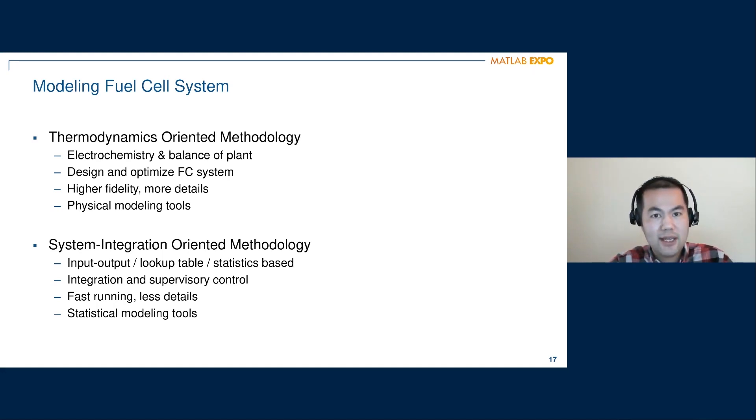It tends to be more statistical in nature and has an input and output type of structure using usually lookup tables or empirical equations to represent the response from a fuel cell system. This type of model contains less details, runs faster, and is suitable for system integration study or designing supervisory controllers.